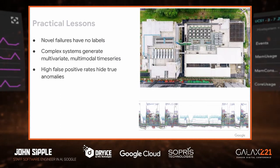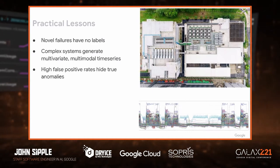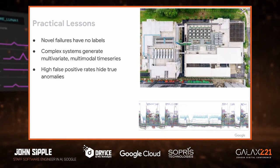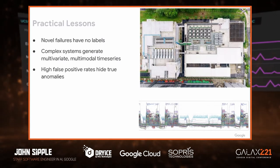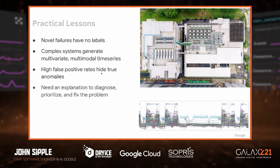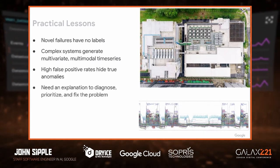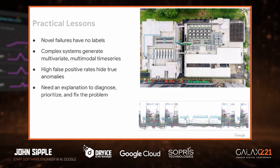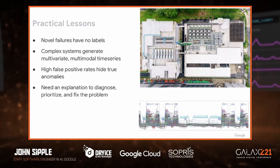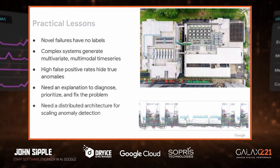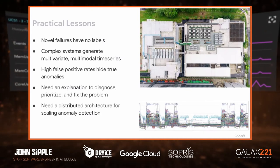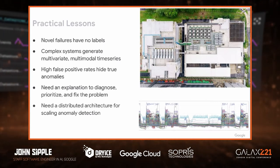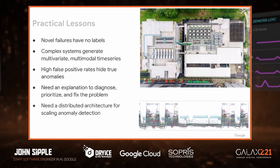Also, anomaly detection solutions tend to be bothered by high false positive rates, which can hide true anomalies. If it's very costly to investigate each anomaly and many of them are false positives, it's very possible the technician team will never actually identify a true anomaly. The important lessons: it's very important in practice to provide an explanation to an anomaly detection problem so technicians can diagnose, prioritize, and fix the problem. Secondly, if you want to scale anomaly detection to tens or hundreds of thousands of devices, you need a distributed architecture.